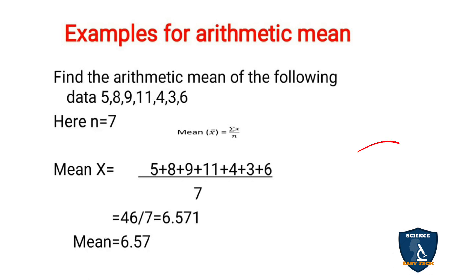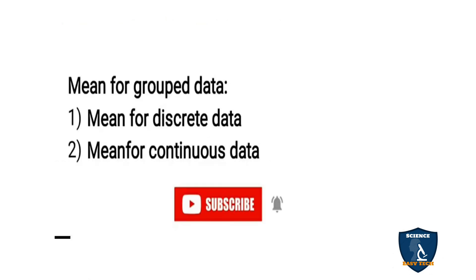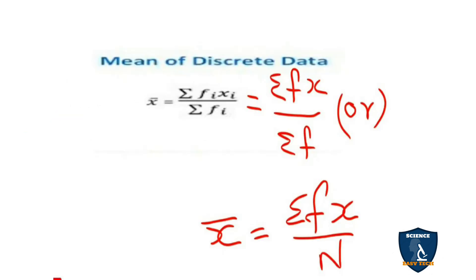Next we will see arithmetic mean for grouped data. In grouped data, as mentioned, you have continuous series and discrete series. The formula is the same for both: x̄ = Σfx ÷ Σf, which can also be written as Σfx ÷ N. This formula applies not only to discrete data but also to continuous data.